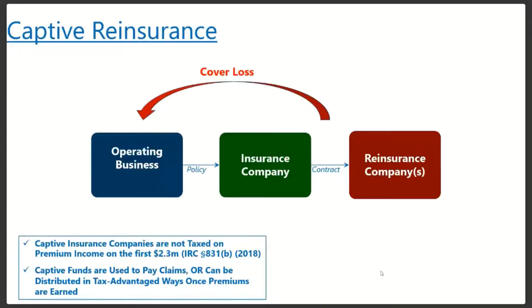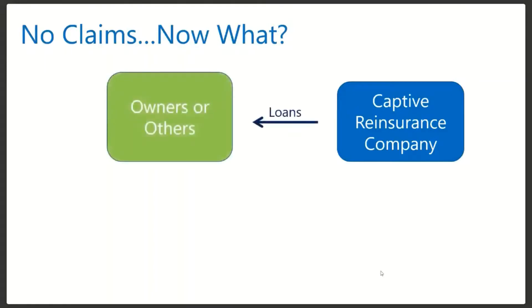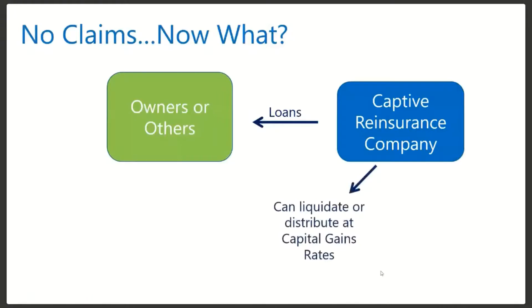What we hope happens is that there is no loss — that things go well, these losses don't occur, and we don't have money traveling back from the reinsurance company into our operating business. If there are no claims, the captive reinsurance company is no longer subject to any policy exposure and is just like any other C corporation. It can provide loans to the owners of the business or any other individual — related-party loans must meet IRS minimum applicable federal rates. The captive reinsurance company could also liquidate or distribute money at capital gains rates, or invest in life insurance, land, property, or whatever else, just like any normal C corporation.